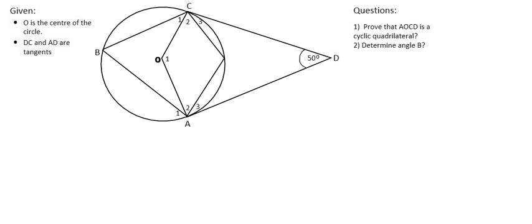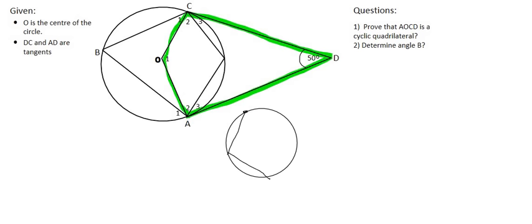The first question asks us to prove that AOCD is a cyclic quadrilateral. Now remember a cyclic quadrilateral is a shape that either touches a circle in four different areas. So it is a quadrilateral which has four sides and it touches the circle at each of its four corners.